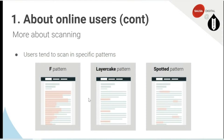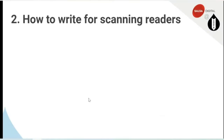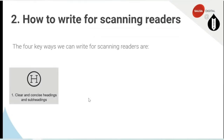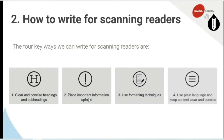So now let's say, well, what does that mean in terms of writing? How are we going to write to address these different patterns? The four key ways we can write for scanning: clear and concise headings and subheadings, placing important information up front, using different formatting techniques, and using plain language and keeping content clean, clear and concise. I'm going to talk about each one of these in a bit more detail.